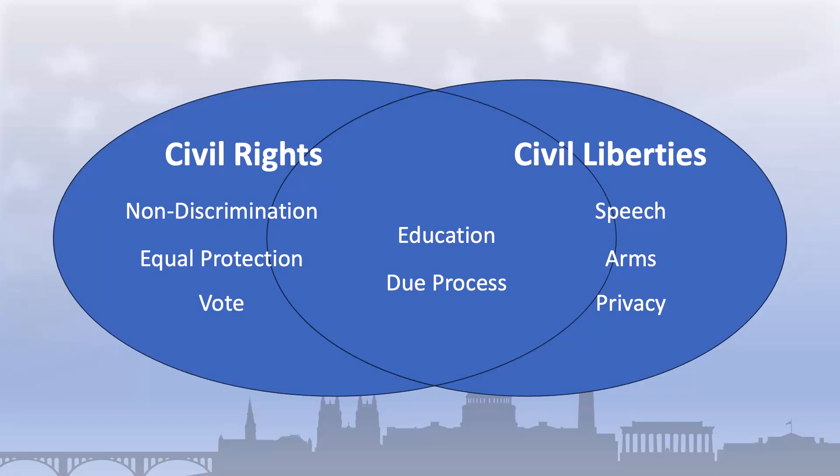Ultimately, the difference between civil rights and civil liberties is, in some cases, a matter of degree. Civil rights tend to be more focused on ensuring equality, while civil liberties tend to be more focused on protecting individual freedoms. But both are essential to a free and just society. In other videos, we're going to explore specific civil rights and civil liberties in greater detail.